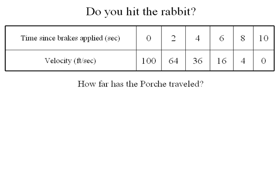In finding out whether or not we hit the rabbit, we basically want to know how far the Porsche has gone. Now we have two-second time intervals, and we have a maximum speed and a minimum speed on each time interval because we're assuming we're hitting the brakes and that the speed is decreasing the whole time.